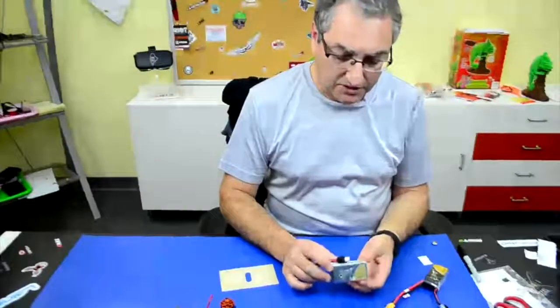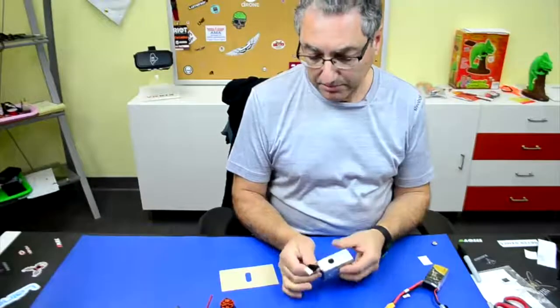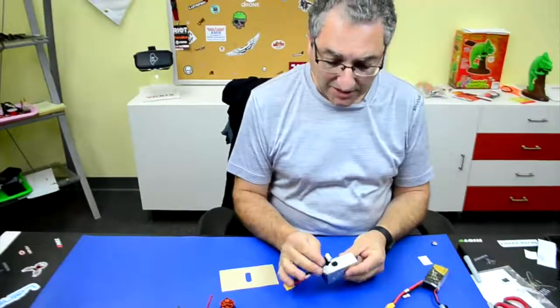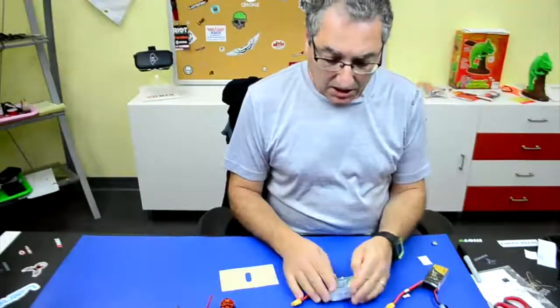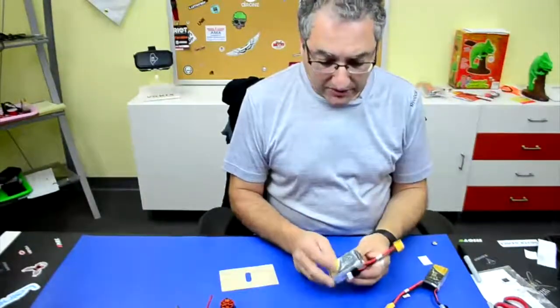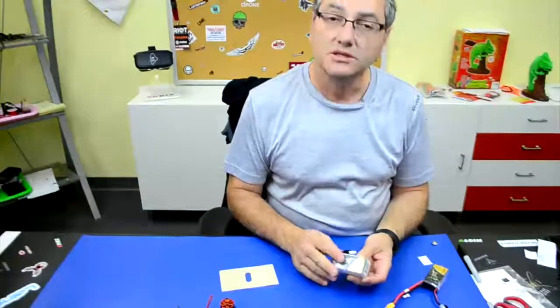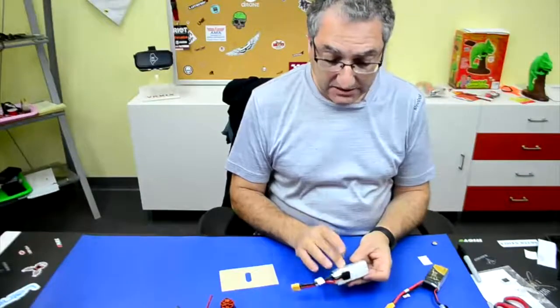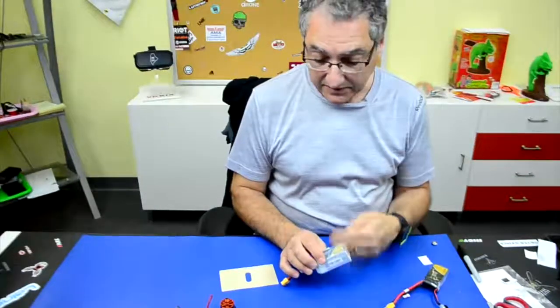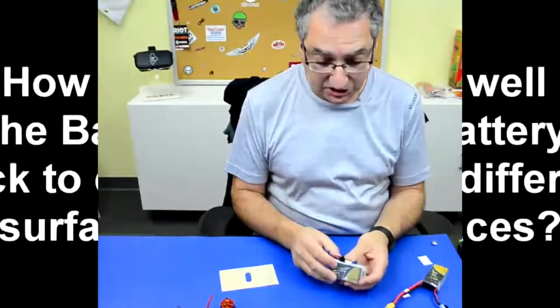A couple of advantages of using the battery wrap is that you won't get your balance cable caught in the props because we'll give you this little velcro here that holds it. The battery wrap also gives you an additional layer of protection so that in an impact or something that hits the battery, if it catches on fire or something, it'll add an additional layer of protection.